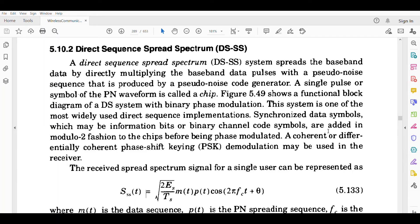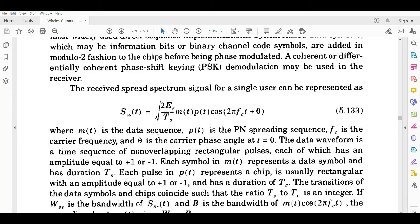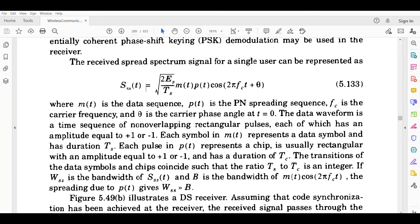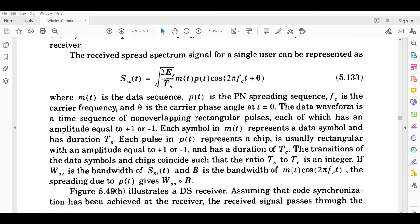The received spread spectrum signal for a single user can be represented as S_u(t) = sqrt(2E/T_s) m(t)p(t)cos(2πf_c t + θ), where m(t) is the data sequence, p(t) is the PN spreading code, f_c is the carrier frequency, θ is the carrier phase angle at t=0. The data waveform is a time sequence of non-overlapping rectangular pulses, each of which has an amplitude equal to plus one or minus one.